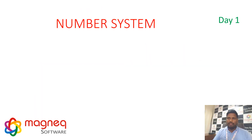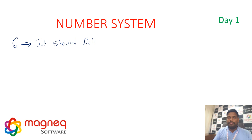Next, the rule for 6: the number should follow both the divisibility rules for 2 and 3.